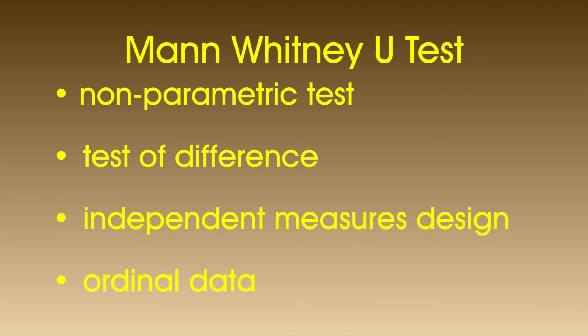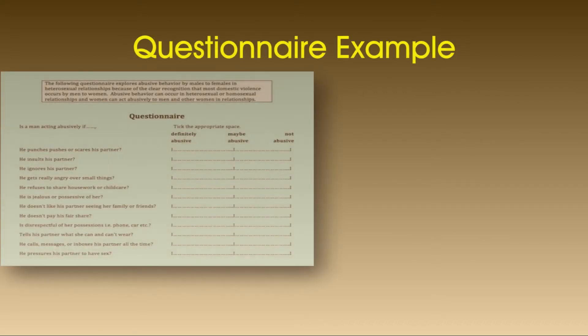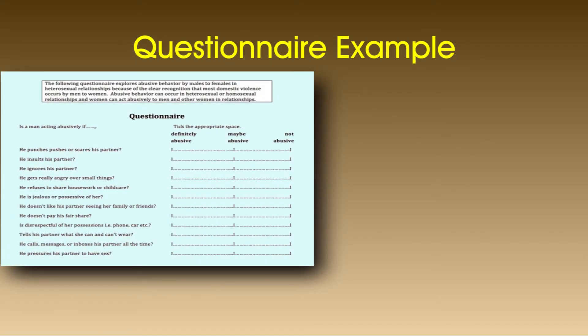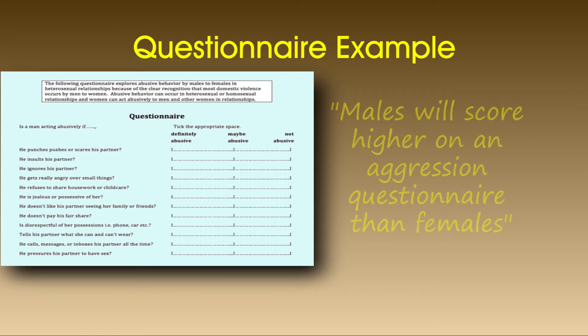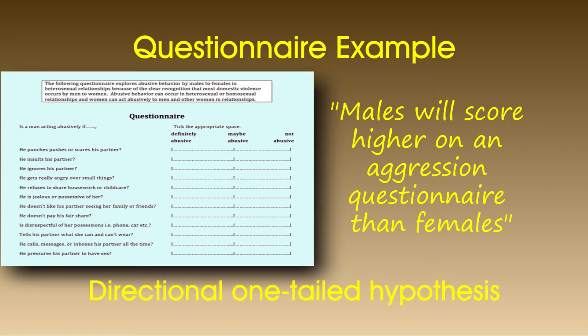Let's look at an example. Imagine that we were doing a questionnaire and we had as our hypothesis that males will score higher on an aggression questionnaire than females. This would be a directional or one-tailed hypothesis as we are stating which gender we expect to score higher.